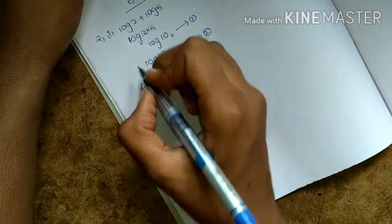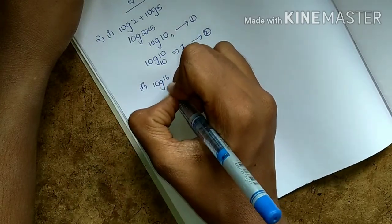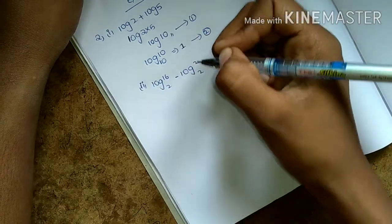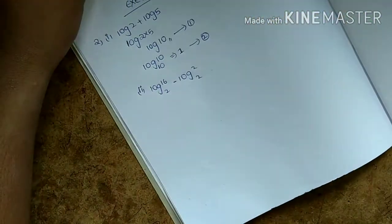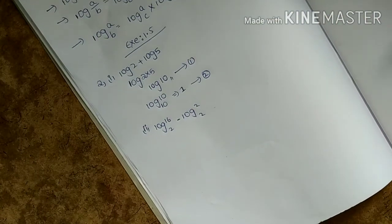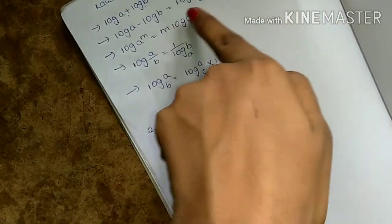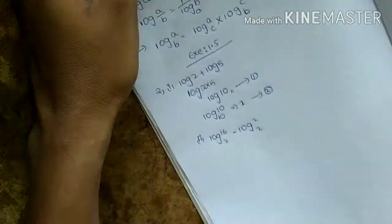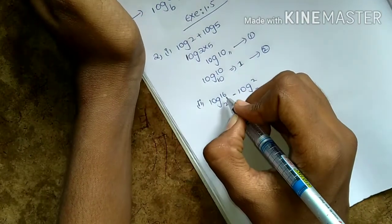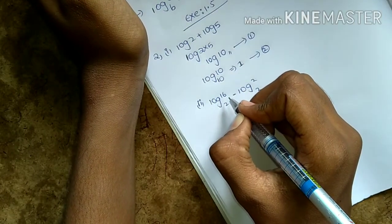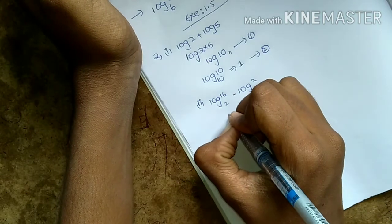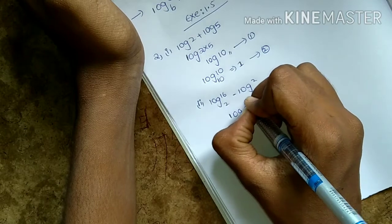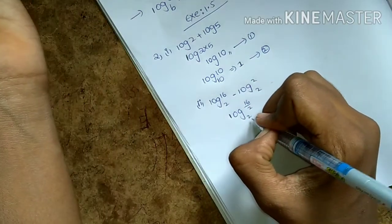The second one: log 16 to the base 2 minus log 2 to the base 2. I will show you how to do this. Using the formula log a minus log b equals log a by b, so this gives log 16 by 2 to the base 2. This gives log 8 to the base 2.